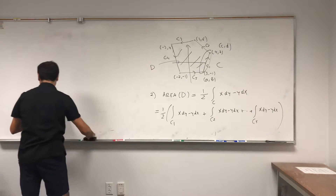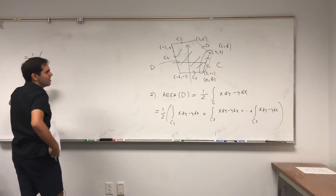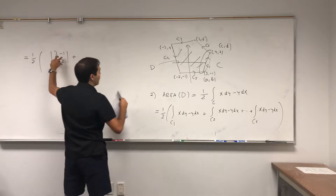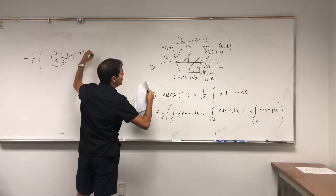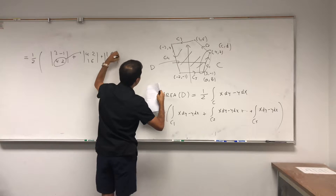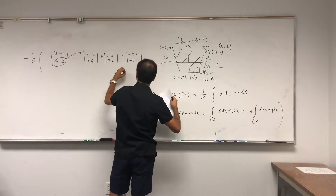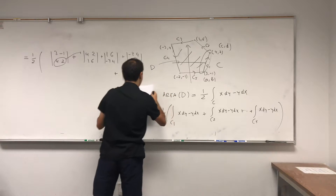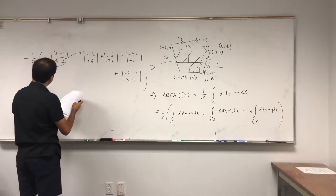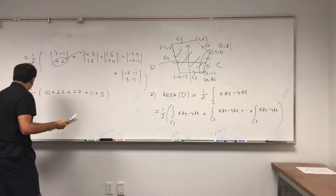So here's the most exciting part — it's one-half times: det[3, −1; 4, 2] plus det[4, 2; 1, 6] plus det[1, 6; −3, 4] plus det[−3, 4; −2, −1] plus det[−2, −1; 3, −1]. If you compute those, you get one-half times (10 + 22 + 22 + 11 + 5) = one-half times 70 = 34. Kaboom!